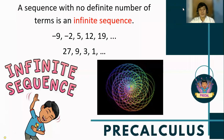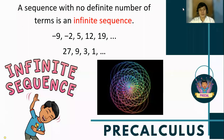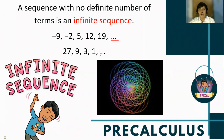A sequence with no definite number of terms is known as an infinite sequence. For example: negative 9, negative 2, 5, 12, 19, and so on. We use the ellipsis symbol to indicate that the sequence continues infinitely.